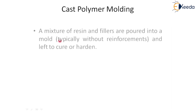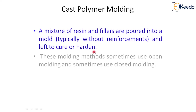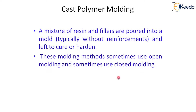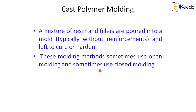Now another process is cast polymer molding. In this process, a mixture of resin and filler is poured into a mold — typically without reinforcement. Unlike earlier processes where only resin was poured, here both resin and fillers are poured into the mold and left to cure. The cast polymer molding methods sometimes use open molding and sometimes use closed molding processes.